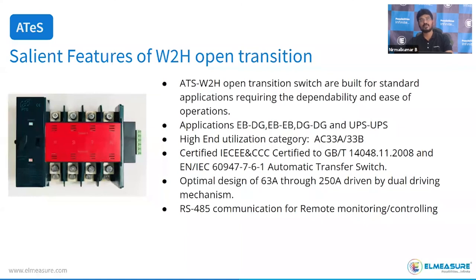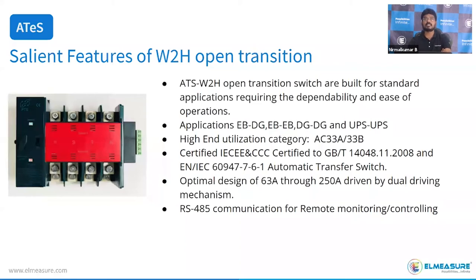Salient features of the WN2H: it is a very economical, compact two-position ATS, majorly used for EB-to-DG changeover applications, suitable for generator OEMs and apartment applications. The utilization category for all solenoid ATS is AC33B — usable for any type of load and designed for high inrush current. The product is certified with IEC double link and CCC certificate as per IEC standard 60947-6-1, optimal for 63A to 250A ranges, with RS-485 communication in the controller for remote control and monitoring.